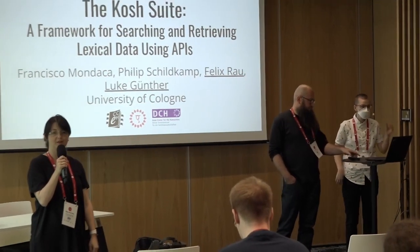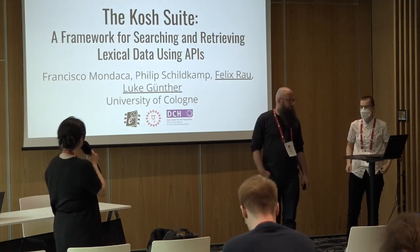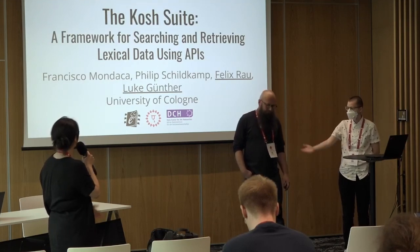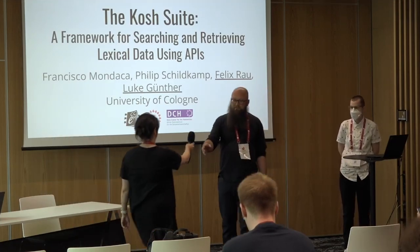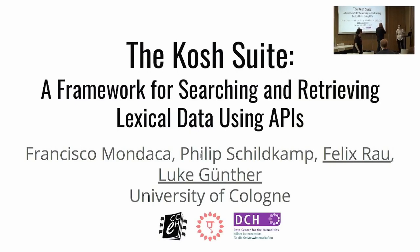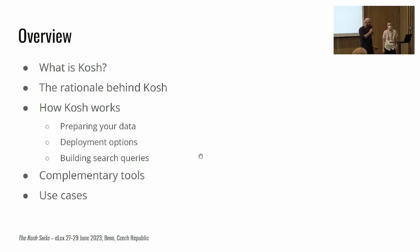We are now moving forward to our second presentation in this block. We will have two presenters: the first one Felix Rau, and then Luke Günther will take over. They will be talking about the Kosh system. The overview of the talk is: Felix will introduce what Kosh is and the rationale behind it, why it was implemented the way it was, and then Luke will take over and present how Kosh works behind the scenes, present some complementary tools that make up the whole suite, and then show some use cases.